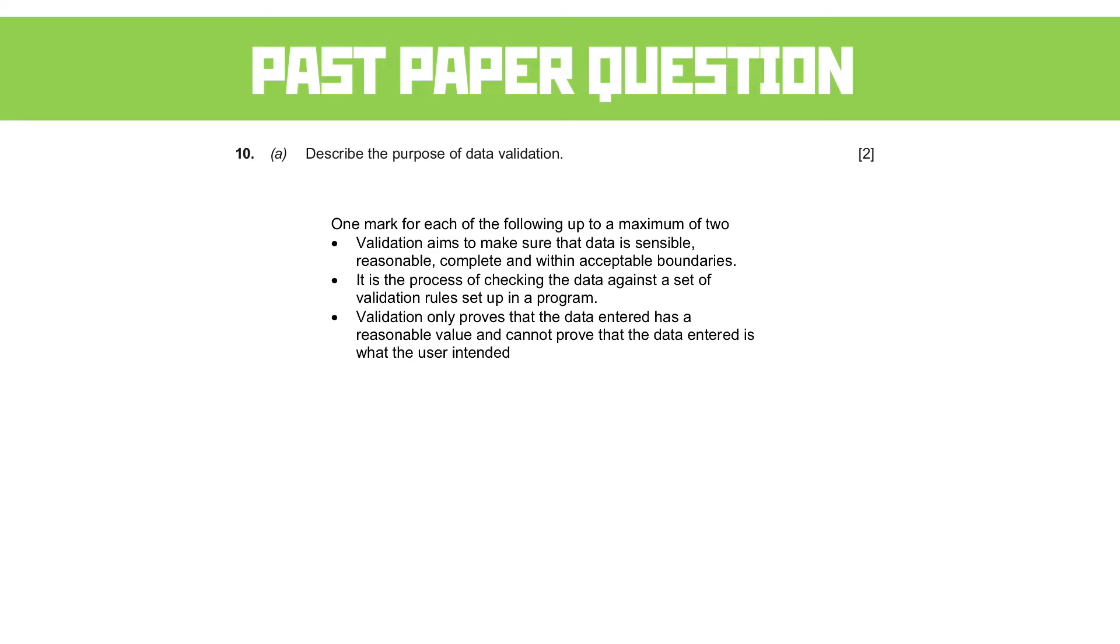Validation only makes sure that it's valid, it's reasonable. We can't check it's exactly what the user intended. A great example of this is the year of birth. You could put 1996, and that might be correct. But if you've accidentally typed 1969, it's still a valid year. The computer is not going to tell you off for that, but it's not correct. It's not what the user intended.